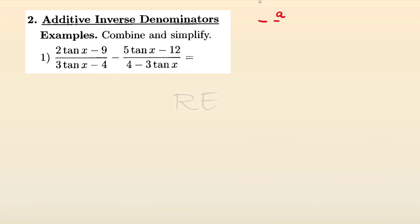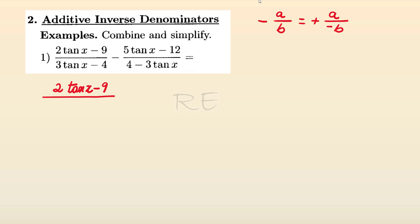Now the denominators are additive inverses of each other. What we can do is, if we have negative A over B, it's equal to plus A over negative B. Let's rewrite the expression.